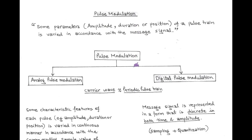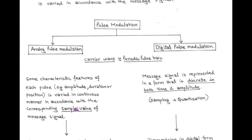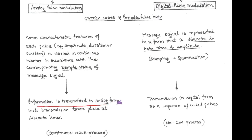Now, on the basis of classification, pulse modulation is of two types. First is called analog pulse modulation and second is called digital pulse modulation. In both cases, a periodic pulse train is used as a carrier signal. In analog pulse modulation, some features of each pulse like amplitude, duration, or position are varied continuously in accordance with the message signal. Or we can say that in analog pulse modulation, information is transmitted in analog form, but the transmission process takes place at discrete time or at discrete samples.